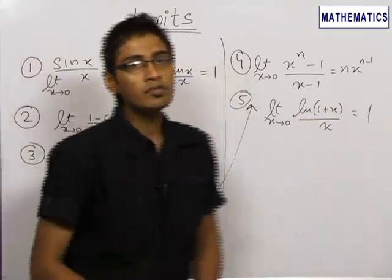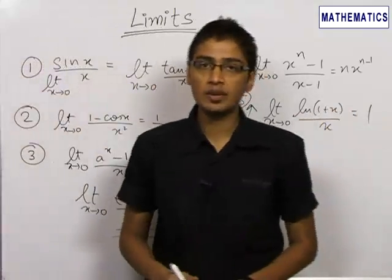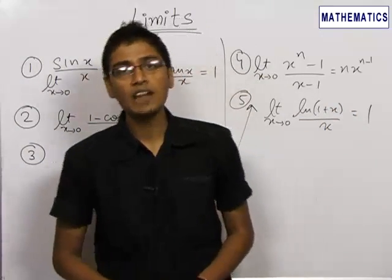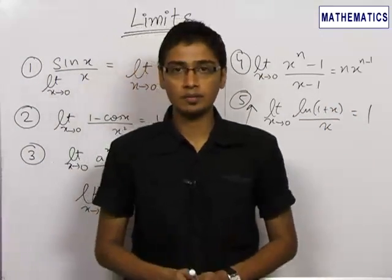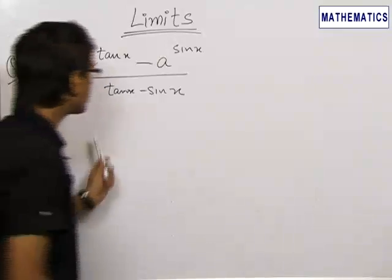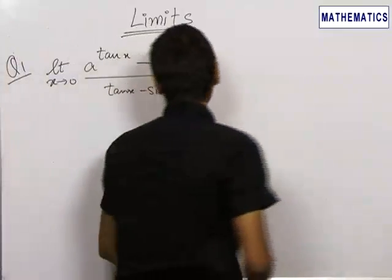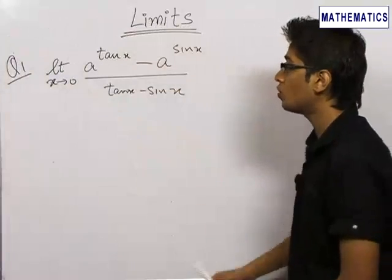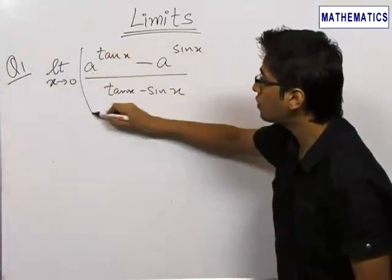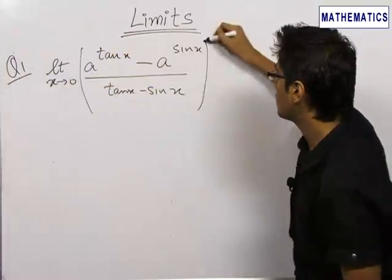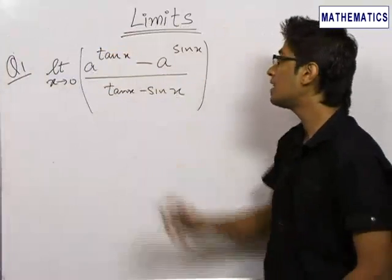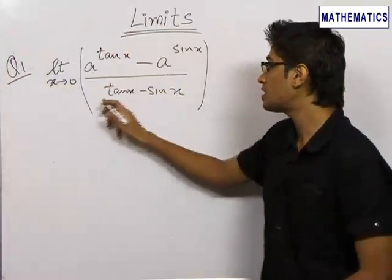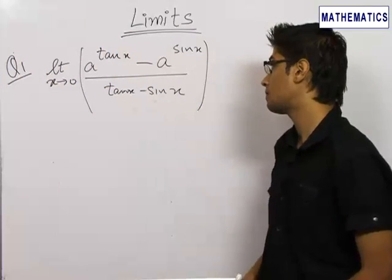These are some of the basic limits which we will be using in this chapter and which you should remember. Our first question asks us to find the limit x tending to 0 of the function a^(tan x) minus a^(sin x) upon tan x minus sin x.